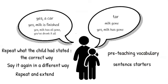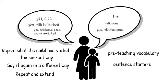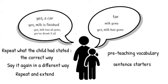Next, sentence starters. These can be used to scaffold conversations and for starting thinking about topics. Start a sentence and leave a gap for a child to finish. For example, 'One thing I enjoyed about our school trip was...' and then we let the child complete the sentence. Sentence starters can also be great for encouraging quieter children to join in.